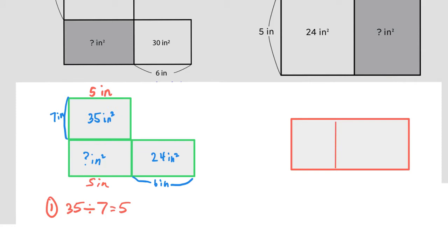Now let's take a look at this over here. If this is 24 square inches and this is six inches over here, it's going to have to be 24 divided by six and hopefully you know that that is four.